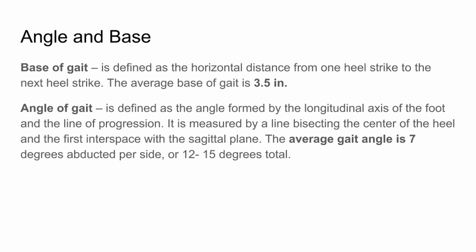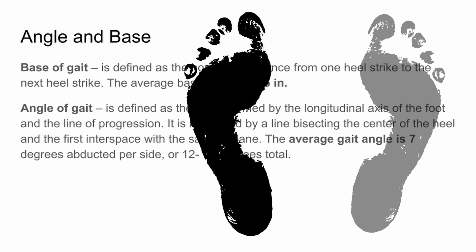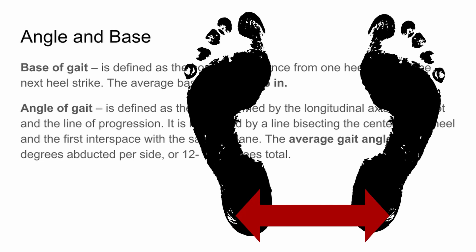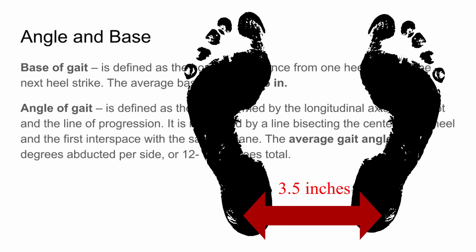To begin, we're going to be talking about a few fundamental definitions. The first is base of gait, and the average base of gait is 3.5 inches. Base of gait is defined as the horizontal distance from one heel strike to the next heel strike.